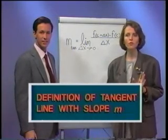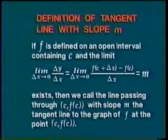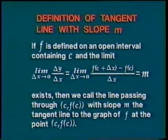We'll generalize the solution with the formal definition of the tangent line with slope m. If f is defined on an open interval containing c, and the limit as delta x approaches 0 of f of c plus delta x minus f of c, divided by delta x, exists and equals m, then we call the line passing through c, f of c, with slope m, the tangent line to the graph of f at the point c, f of c.